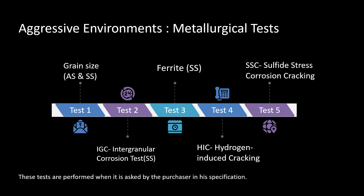We have five categories of metallurgical tests: grain size testing, intergranular corrosion test, ferrite test, hydrogen induced cracking test, and sulfide stress corrosion cracking test. These five types of testing help identify various kinds of defects in materials generally used in the process industry.